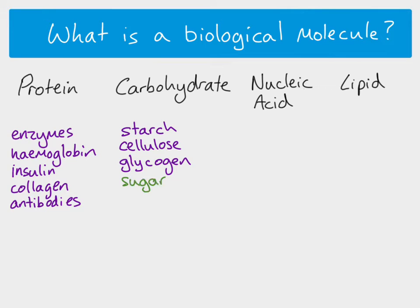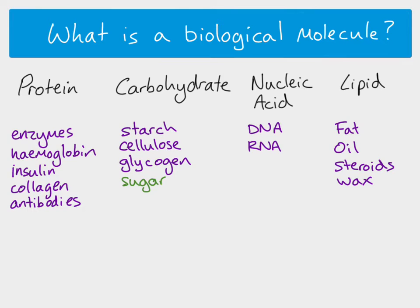For carbohydrates: starch and cellulose are found in plants, and glycogen is found in animals. Then we have sugar, which is a different color — I'll explain why in a minute. For nucleic acids we have DNA and RNA. And for lipids you will have heard of fats and oils, and we also have steroids and wax, which are other kinds of lipids.